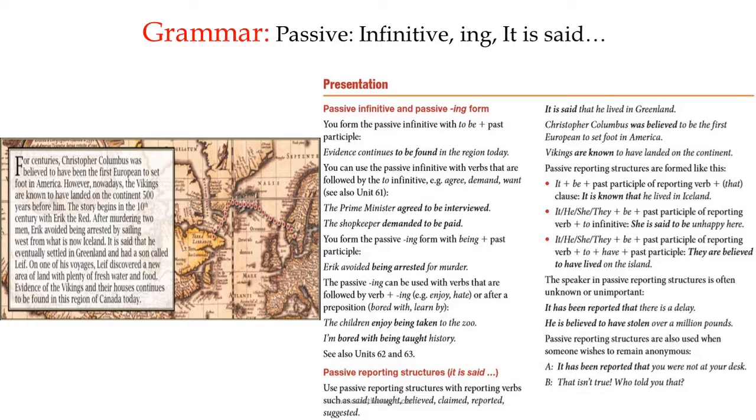Examples: she is said to be unhappy here. They are believed to have lived on the island. The speaker in passive reporting structures is often unknown or unimportant. Example: it has been reported that there is a delay. Another example: he is believed to have stolen over a million pounds. Passive reporting structures are also used when someone wishes to remain anonymous. It has been reported that you were not at your desk. That isn't true, who told you that?